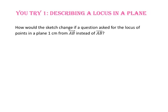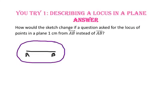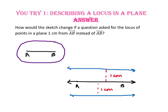Pause the video and do U-try number one. How would the sketch change if the question asked for the locus of points in a plane one centimeter from line AB instead of segment AB? The locus of points one centimeter from segment AB included semicircular ends at the endpoints. But line AB has no endpoints — it goes on forever in both directions. So the locus of points one centimeter from line AB would be two parallel lines, each parallel to line AB, one centimeter above and one centimeter below.